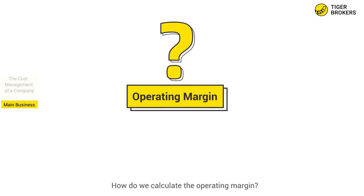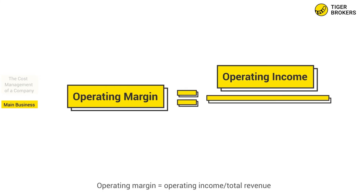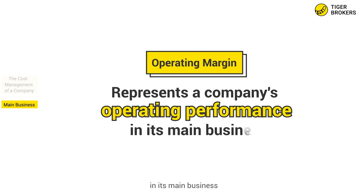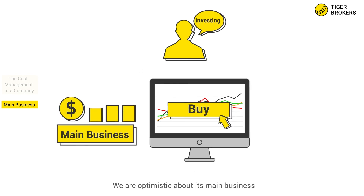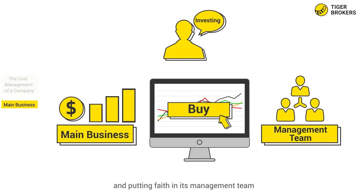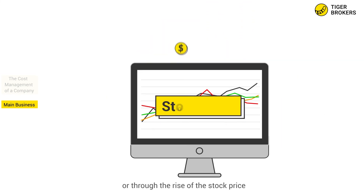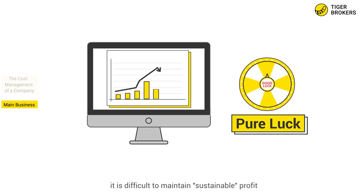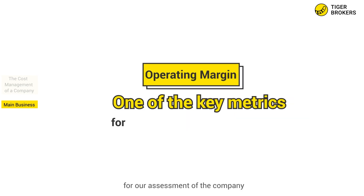How do we calculate the operating margin? The equation is as follows: operating margin equals operating income divided by total revenue. Unlike gross margin, operating margin represents a company's operating performance in its main business. When we buy a company's stock, we're investing in this company — optimistic about its main business and putting faith in its management team. If the company does a good job in its main business and generates higher profit, we as shareholders will benefit by receiving dividends or through the rise of the stock price. However, if the company generates profit from pure luck, it is difficult to maintain sustainable profit. Therefore, the operating margin is one of the key metrics for our assessment of a company.